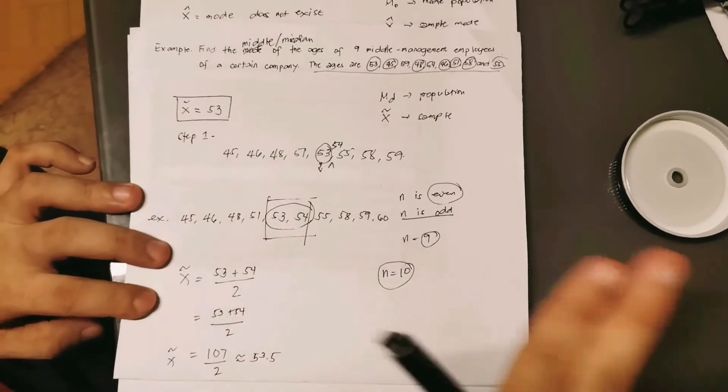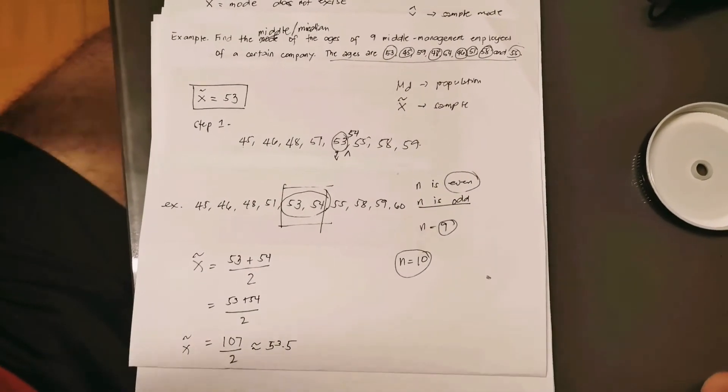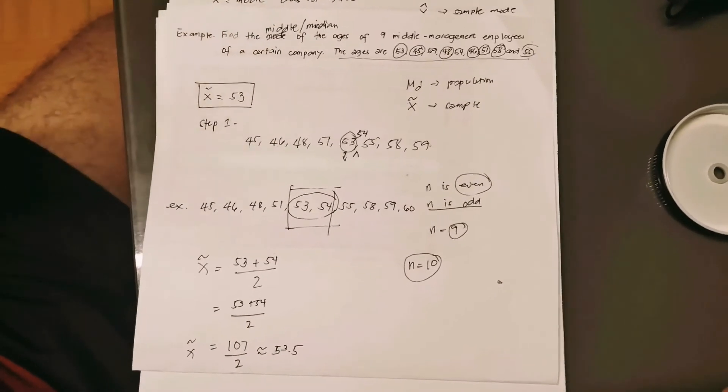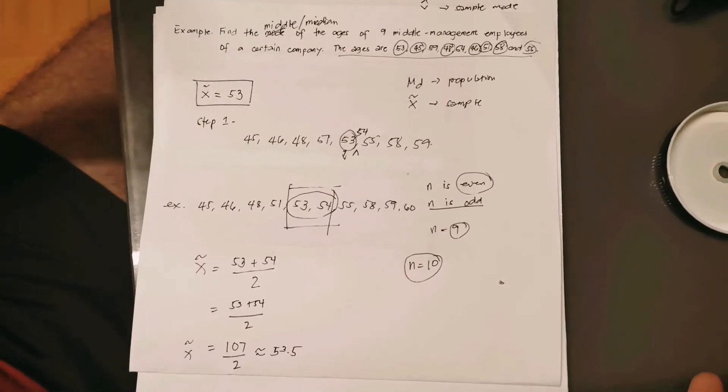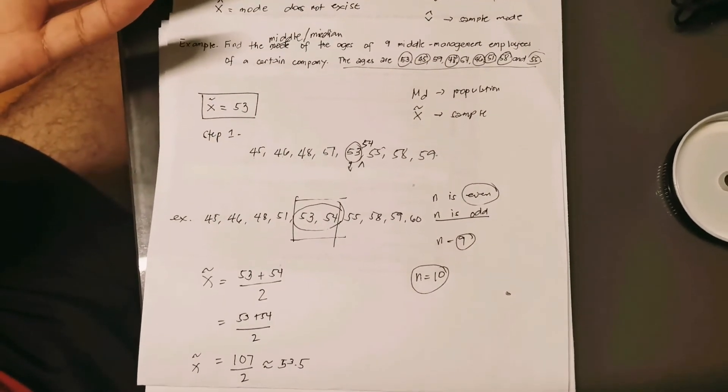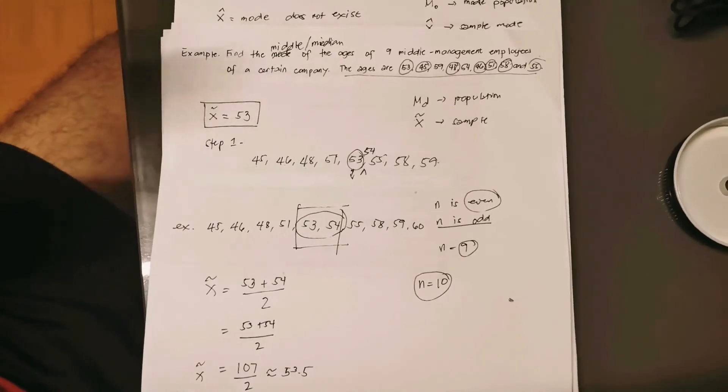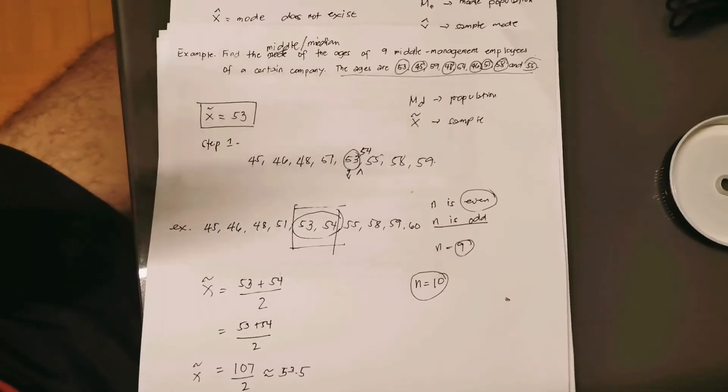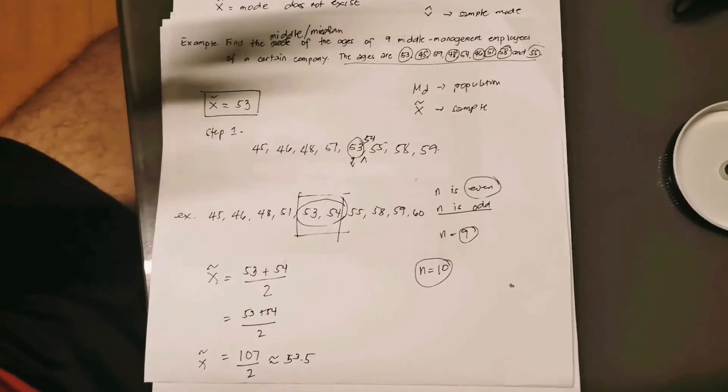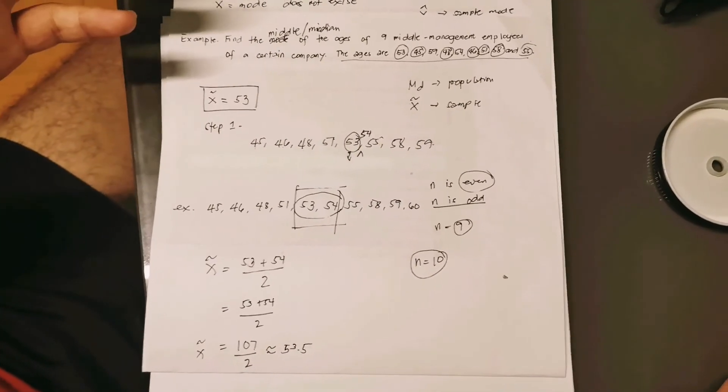There you go, you will find its median. This is a very quick example of finding the median of a given dataset. That completes the series of measure of central tendency for ungrouped data. We did mean, median, and mode. Should you have any questions or clarifications for this video, please leave a question in the comment section. Thank you so much for watching, see you around. Please keep posted by clicking the notification bell, and it will be much appreciated if you will subscribe to my channel. Thank you guys and be safe.